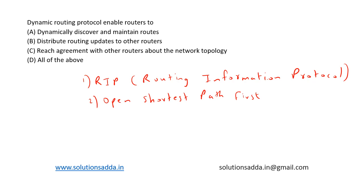Dynamic routing protocols enable routers to discover and maintain routes, distribute routing updates to other routers, and reach agreement about the network topology. So options A, B, and C are all correct, making the correct answer option D: all of the above.